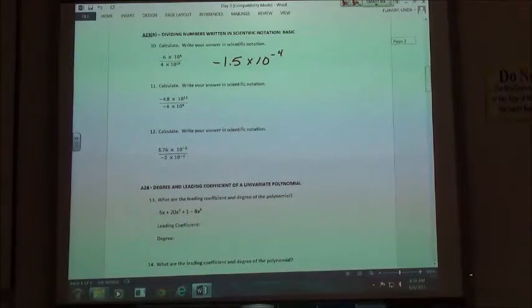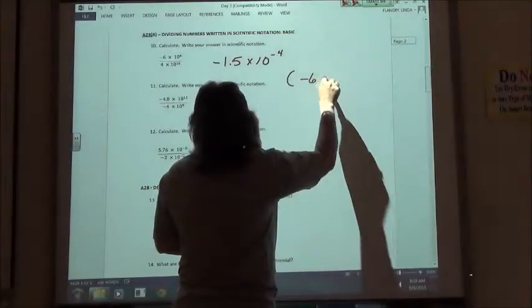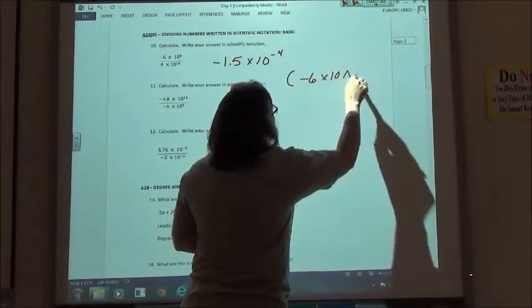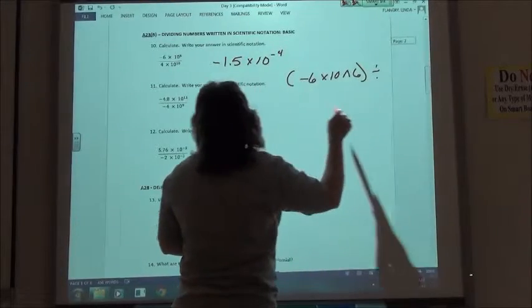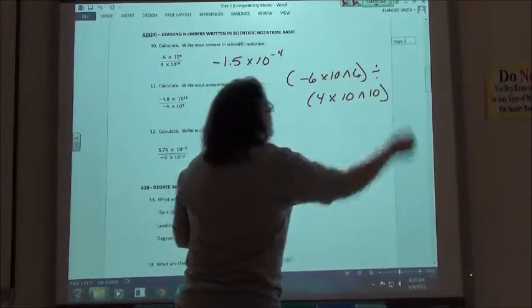Just for fun, on your calculator, we're going to do negative 6 times 10 to the 6th power, and then we're going to divide that by 4 times 10 to the 10th power.